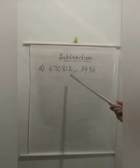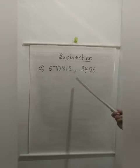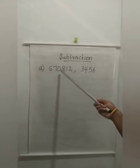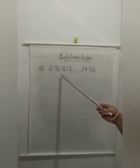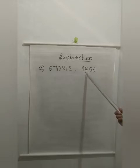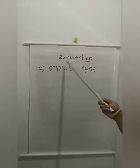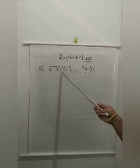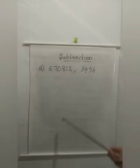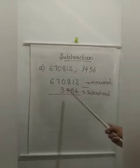So which is the largest number? Yes, the 6-digit number, that is 6,70,812, is the largest number. So that we write first, then 3,456. So these two numbers have names. The larger number from which we subtract is known as the minuend.